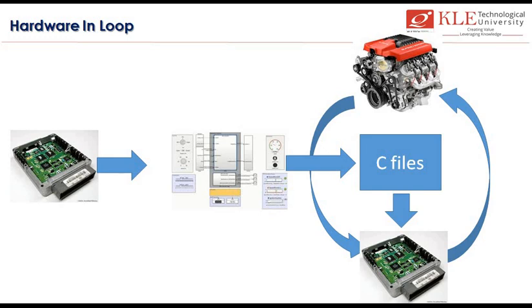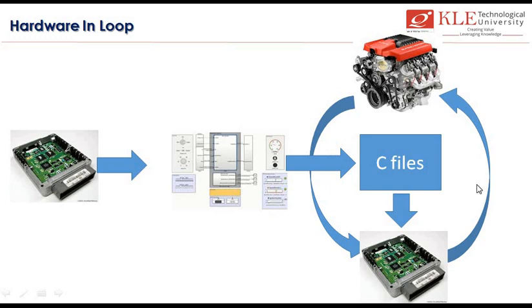Next we have HIL — Hardware In-Loop. Here I have a prototype or actual plant model, such as an engine. I model the controller behavior in the simulation software, generate a C file, convert it to a binary file, and dump it to the target hardware. The hex or binary file runs on the real hardware as the controller. The engine could be a prototype or a real engine. I connect them together in a loop, and that becomes my HIL — Hardware In-Loop.